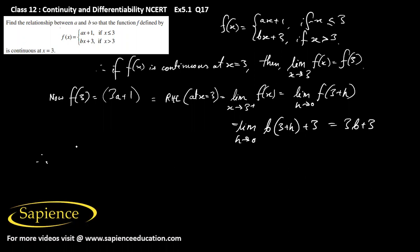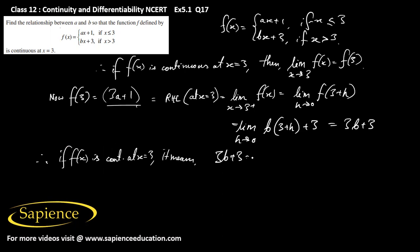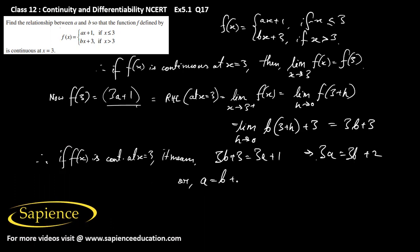So f(3) = 3a + 1, and if f(x) is continuous at x = 3, then it means 3b + 3 should be equal to 3a + 1. Therefore, 3a should be equal to 3b + 2. Or we can write that a should be equal to b + 2/3.